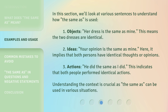In this section, we'll look at various sentences to understand how the same as is used. 1. Objects: Her dress is the same as mine — this means the two dresses are identical. 2. Ideas: Your opinion is the same as mine — it implies that both persons have identical thoughts or opinions. 3. Actions: He did the same as I did — this indicates that both people performed identical actions.